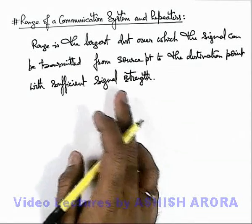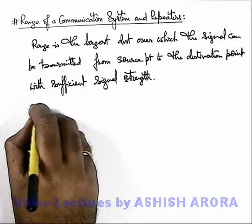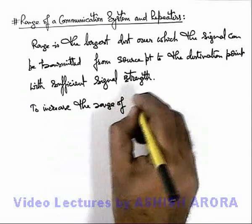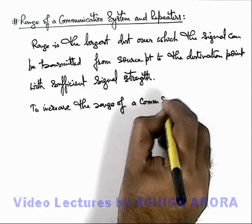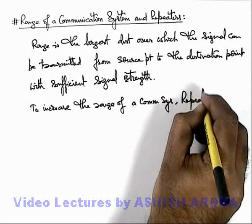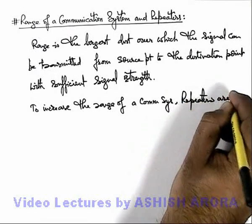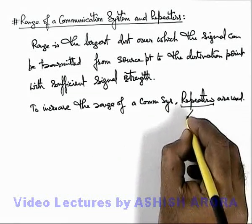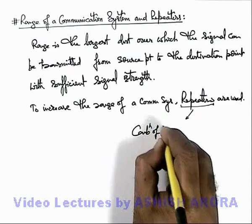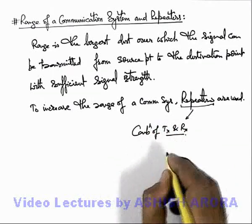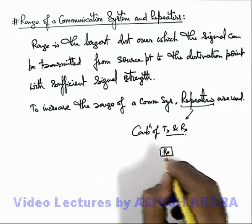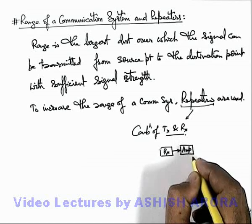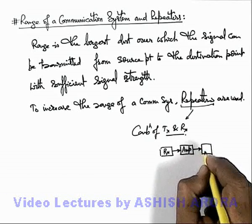If we wish to increase the range of a communication system, repeaters are used. A repeater is basically a combination of a transmitter and a receiver. The signal is supplied to an amplifier to increase the signal strength, and again it is fed to a transmitter.